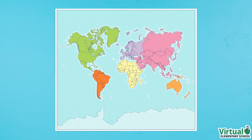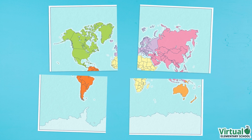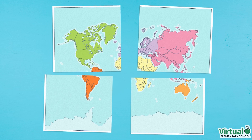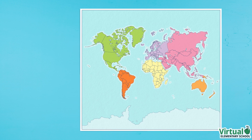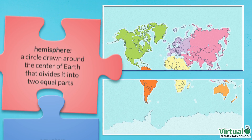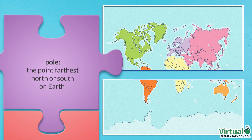The world we live in is a fascinating place — there are many parts, just like a puzzle. Let's look at each part of the world. This is the equator. The equator is an imaginary line around the middle of the earth that divides it into northern and southern hemispheres.